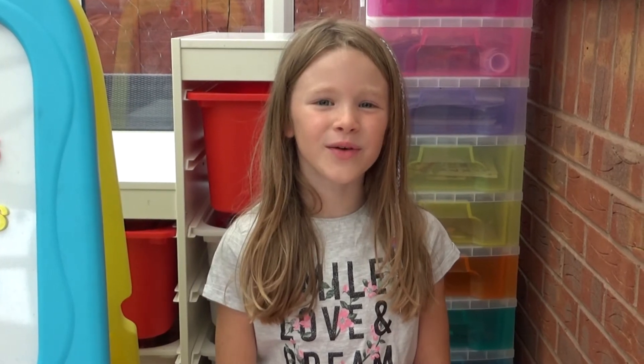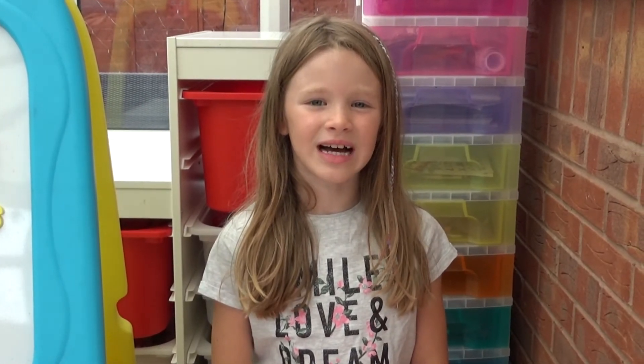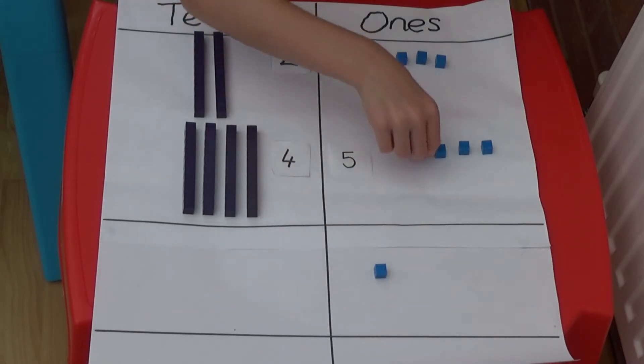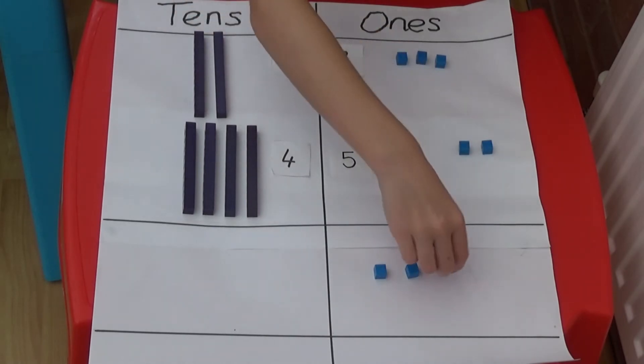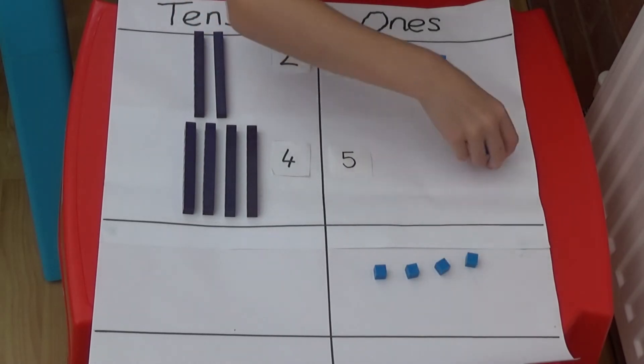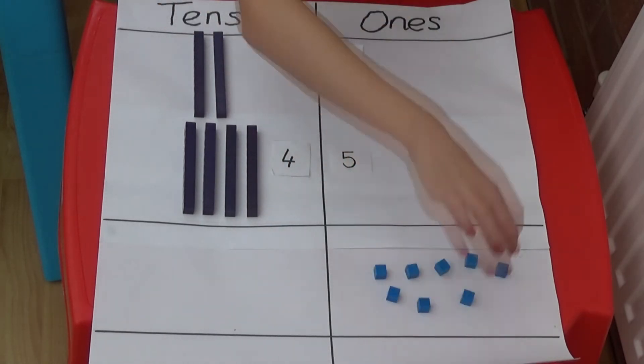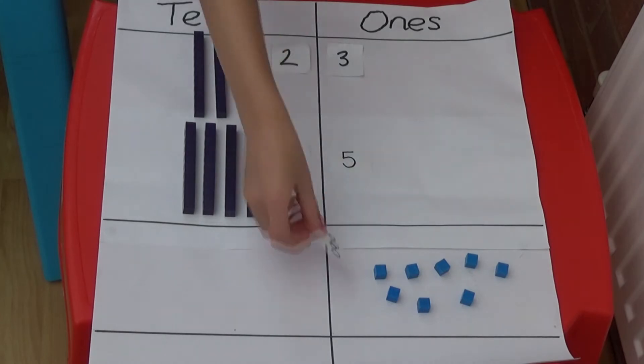When we do column addition we always start by adding the ones first. I'm going to start by adding together the three and the five. So my ones add up to eight.